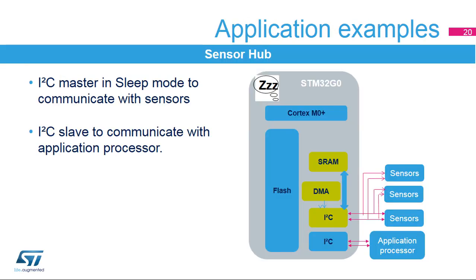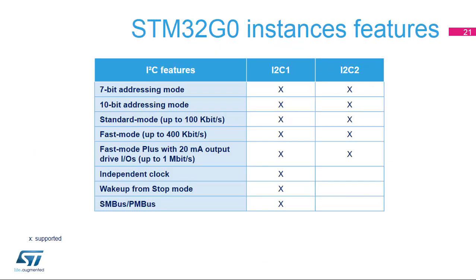Here is an example of a sensor hub application that requires several I2C peripherals. One or several I2C masters are used to interface with external sensors, and an I2C slave is used to communicate with the application processor. STM32G0 microcontrollers embed two I2C peripherals; only I2C1 supports independent clock, wake-up from stop mode, and SMBus/PMBus.